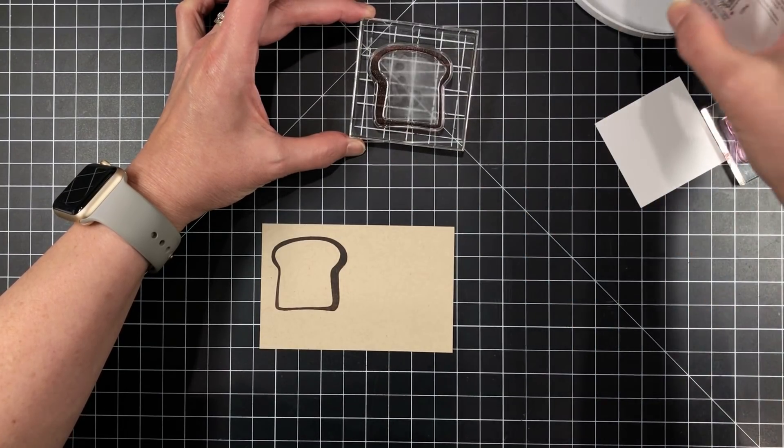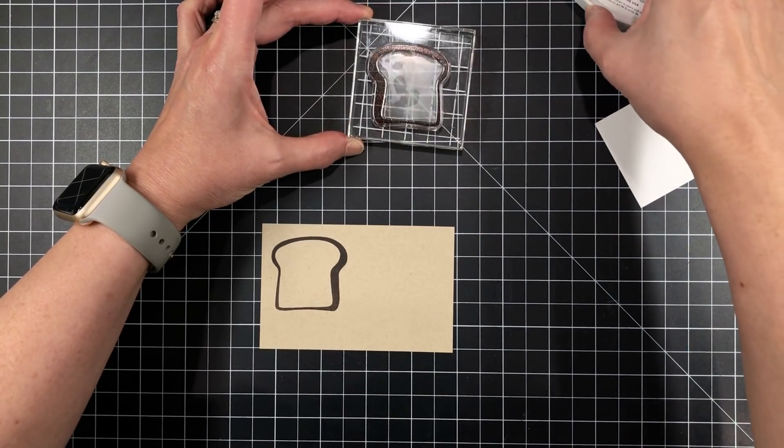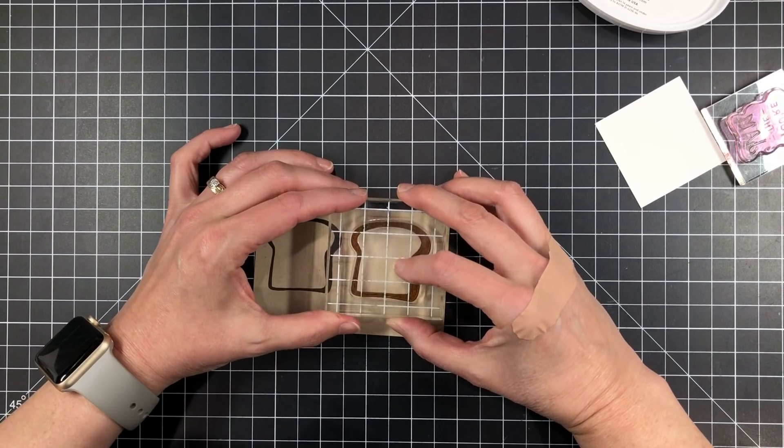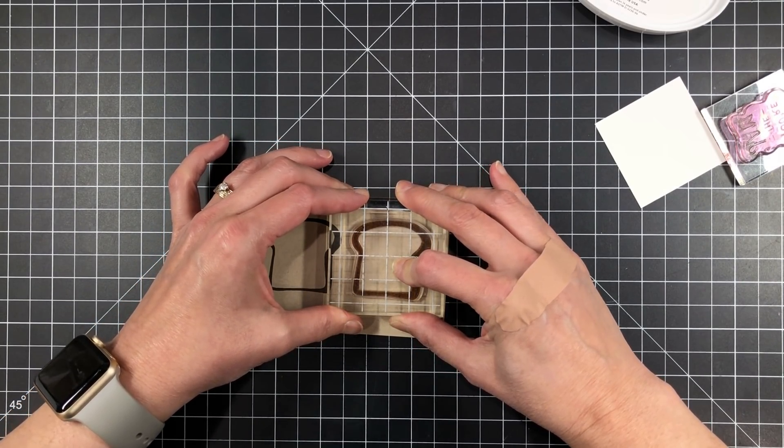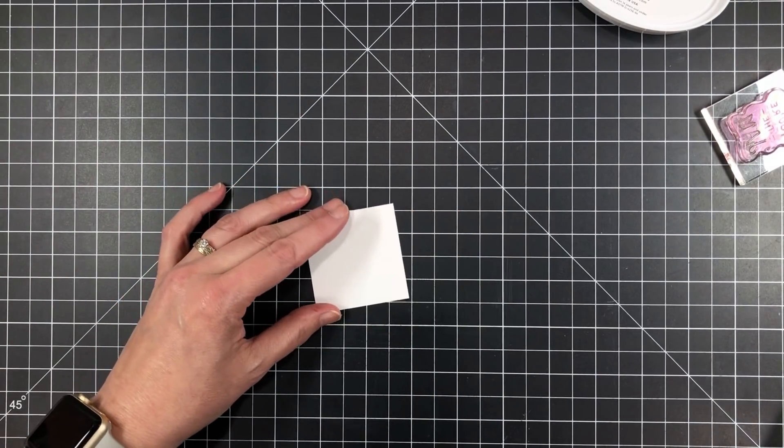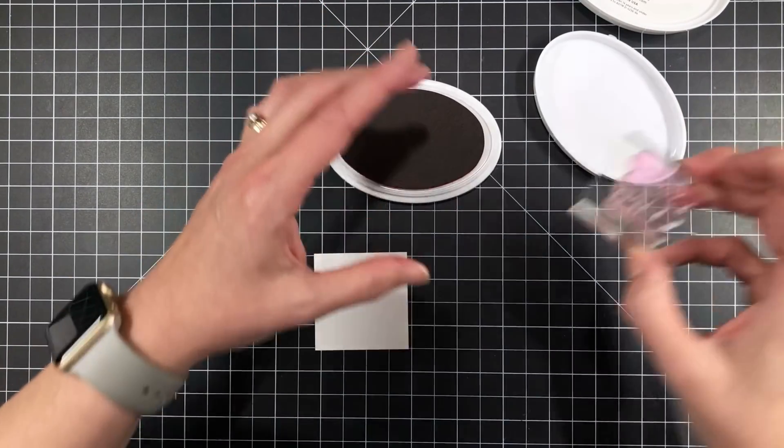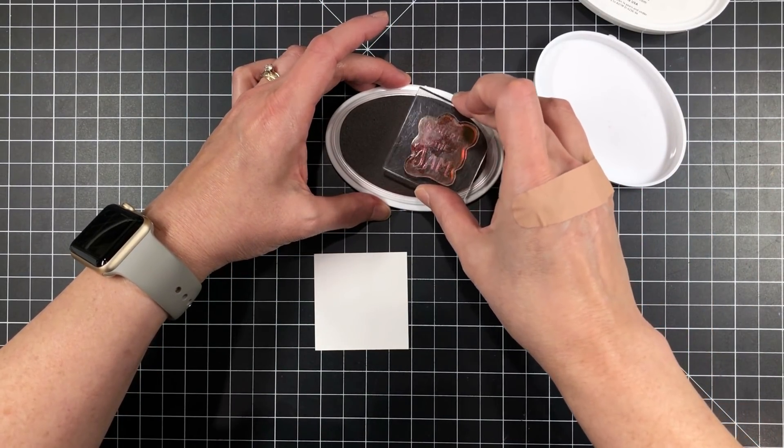And I'm stamping onto some Neenah Desert Storm. This is a craft-colored cardstock and I always save my scraps. And thank goodness I had one here that was perfect for these two slices of bread. And I also had a scrap of Solar White. And these are all 80-pound weights of cardstock that I'm working with.